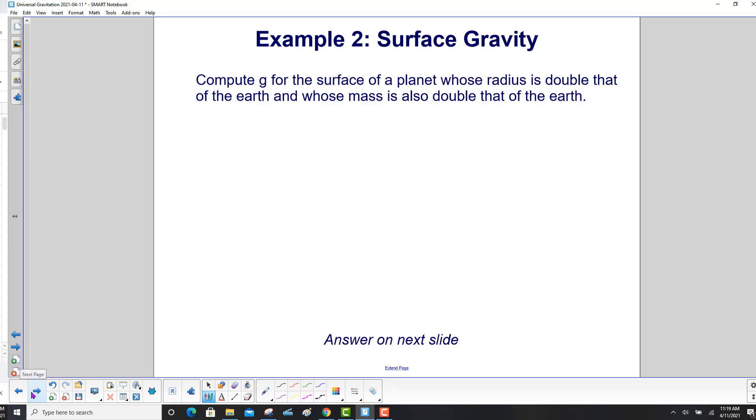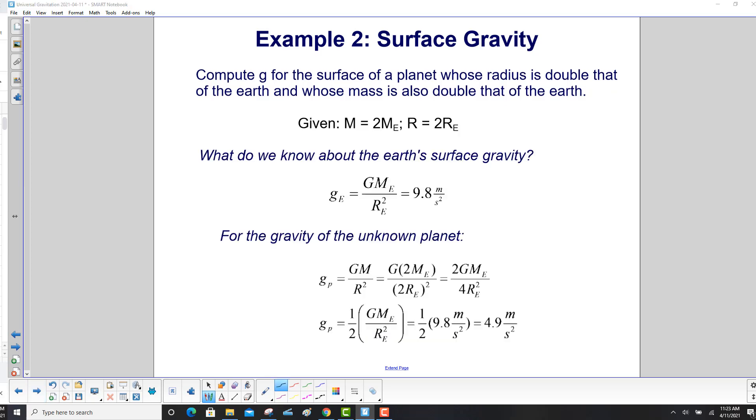Example 2. Compute g for the surface of a planet whose radius is double that of the Earth and whose mass is also double that of the Earth. We're given that the mass of this planet is twice the mass of Earth, and its radius is twice the radius of Earth. So what do we know about the Earth's surface gravity?